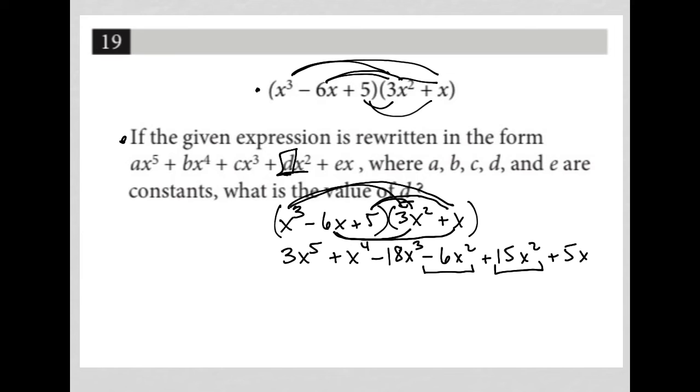So what I have here is negative 6x squared and positive 15x squared. So when I add negative 6x squared plus 15x squared, I get 9x squared.